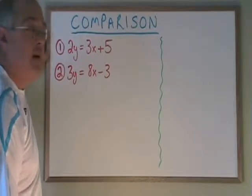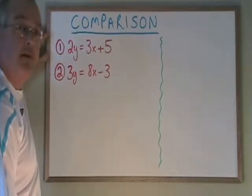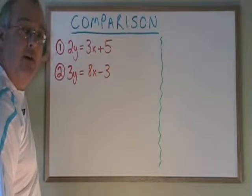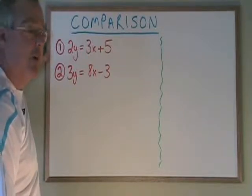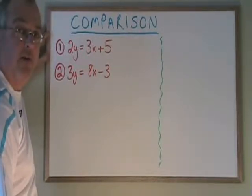Comparison is a method of finding the point where two straight lines cross without having to graph the straight lines. We can use algebra to find the point of intersection.